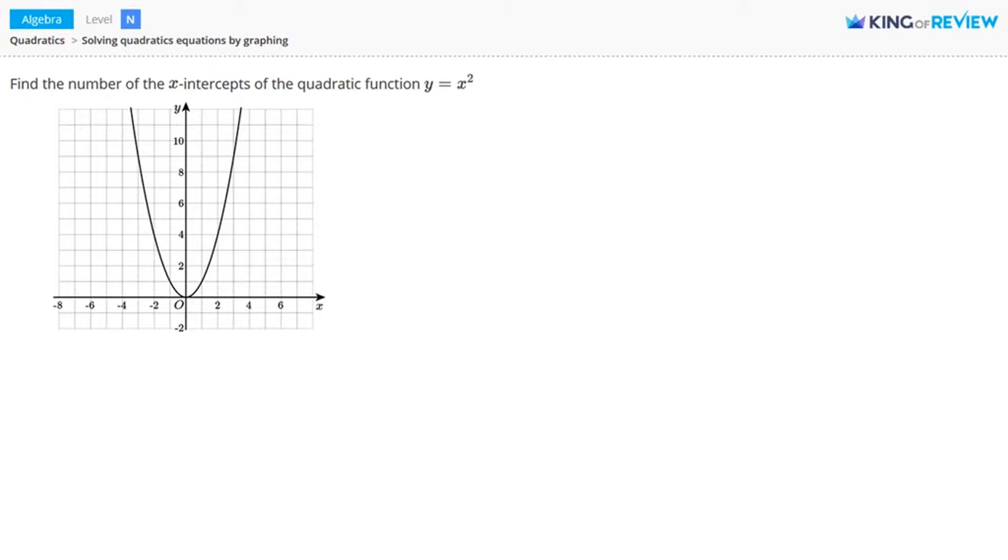So in this problem, we want to know the number of x-intercepts. Let's think about an x-intercept. If we were to plot a line like this, where does this line cross the x-axis? Well, it crosses right here. The x-intercept is where the graph crosses or touches the x-axis. So right here.